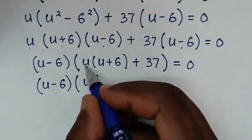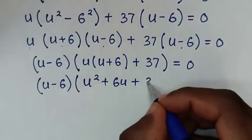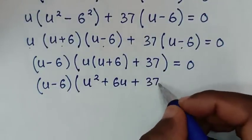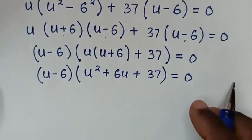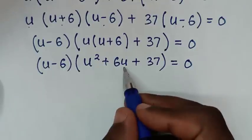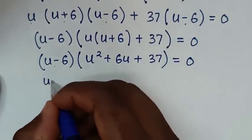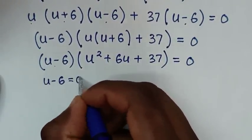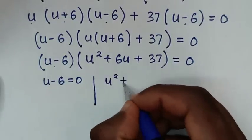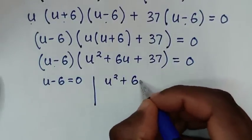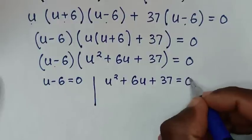Expanding gives (u minus 6)(u² plus 6u plus 37) equals 0. From here we have two solutions: the first solution is u minus 6 equals 0, and the second solution is u² plus 6u plus 37 equals 0.